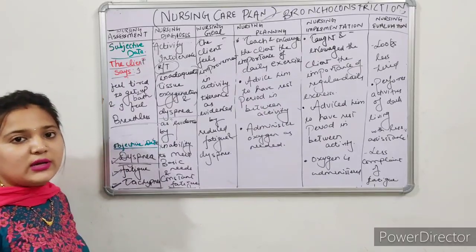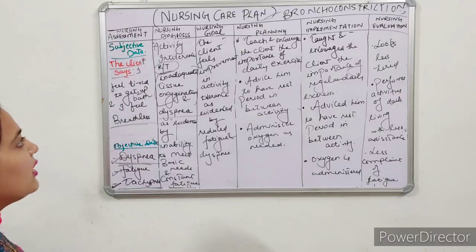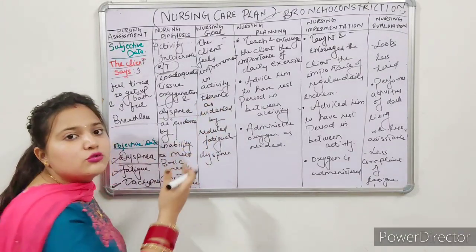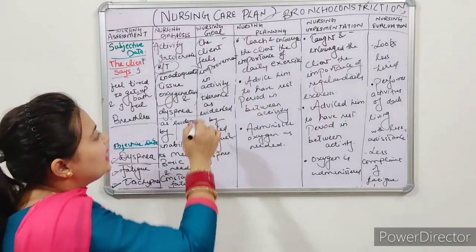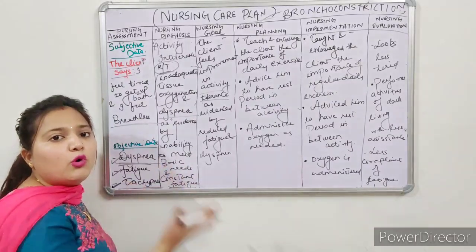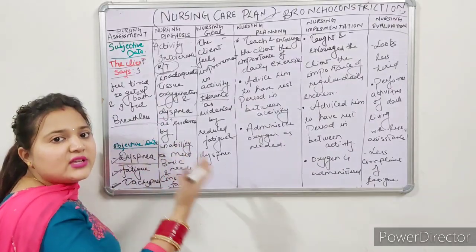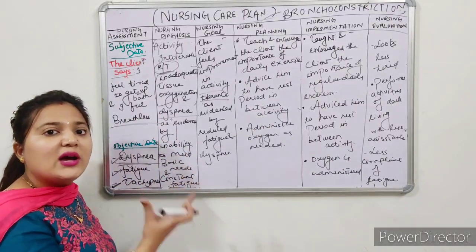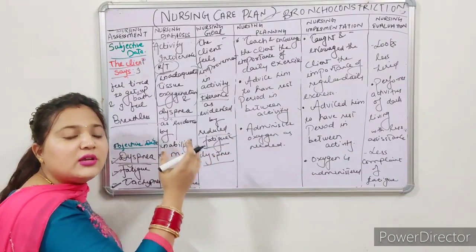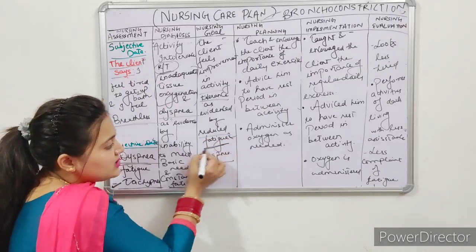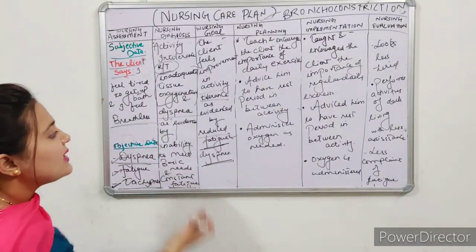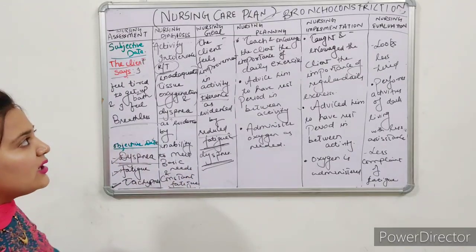Nursing Goal: The client feels improvement in activity — activity tolerance improves — so the client can perform all activities without feeling tired or having breathing difficulty. This goal will be achieved when: as evidence by reduced fatigue and dyspnea. If we plan and implement in a way that fatigue reduces and dyspnea is relieved, then our goal is achieved. So we write: as evidence by reduced fatigue and dyspnea.